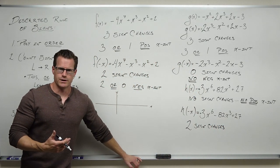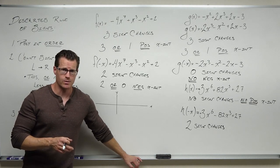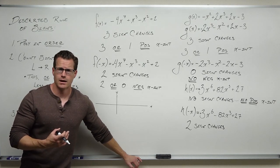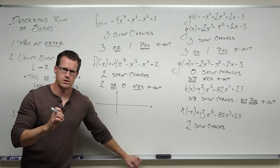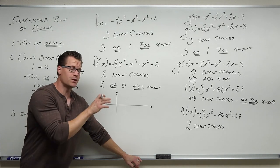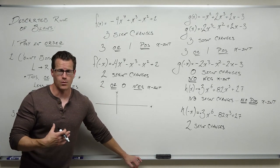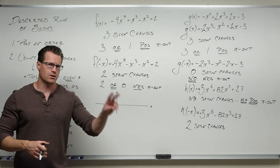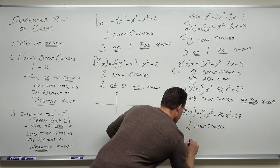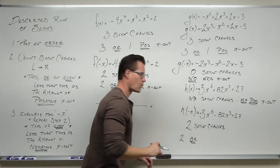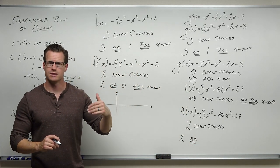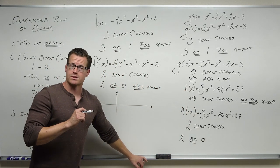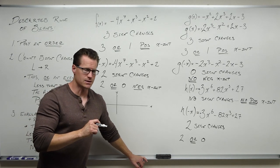Now what does it mean? I gave you a lot of explanation about why this stuff works and how it works — I don't just want you to be able to do it, I want you to understand the interplay between irreducible quadratics, the degree, and why we subtract two. Two sign changes means we will have either two, or subtract two from that number down to one or zero — so two minus two is zero. Two or zero negative x-intercepts.